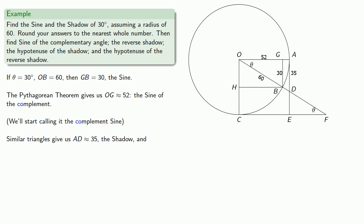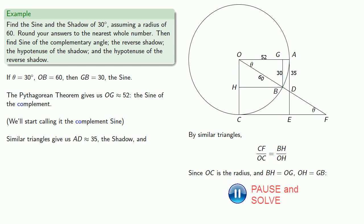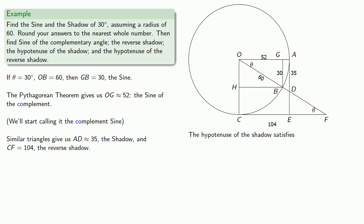For the reverse shadow, we have another pair of similar triangles, OHB and OCF. So we know that CF is to OC as BH is to OH. Since OC is the radius and BH equals OG and OH equals GB, we can substitute in those values and solve for the length of the reverse shadow. We can find the two hypotenuses by the Pythagorean theorem again.